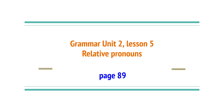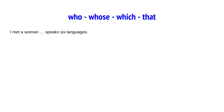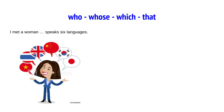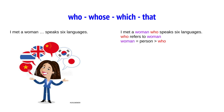A relative pronoun talks about a noun in a sentence — it refers to it. Look at this example: Yesterday I met a woman who speaks six languages. Why who? Why not which or whose? Well, who refers to woman. Woman is a person, and when you talk about a person, it is who.